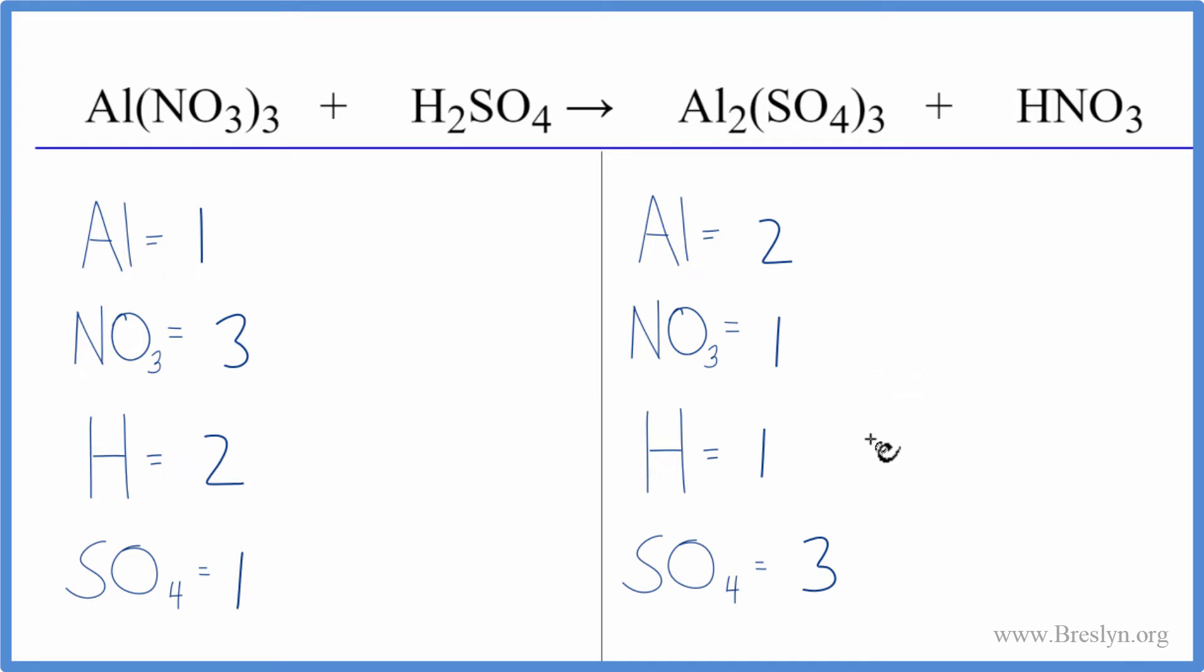Let's start with balancing the aluminum. We have two here and one here - we'll put a two in front of the aluminum nitrate. One times two, that'll give us two of those - those are balanced.